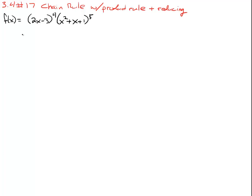In this example we are going to look at using the chain rule in conjunction with the product rule to evaluate the derivative of something of this nature. Whenever we have to use two techniques together it can often times be helpful if we break it down into smaller parts so that we don't get ahead of ourselves. We can see that the overarching thing is we are going to have to do a product.